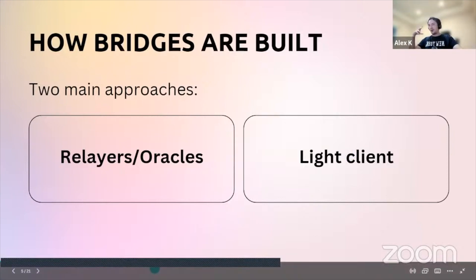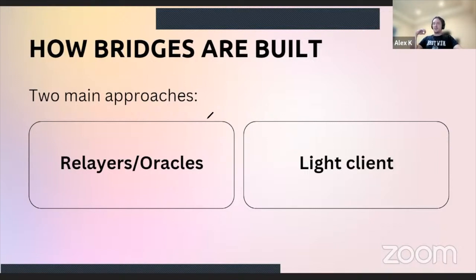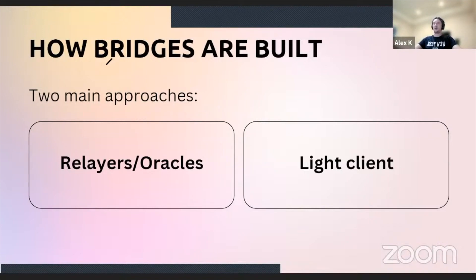Looking at bridges and liquidity and token transfers between chains, there are two main approaches used on the market today. We'll call them the relayers-and-oracles approach and the light client approach. For example, if we talk about relayers and oracles, the most common names that pop up are AnySwap and Multi-chain. For light clients, probably the purest example is the Rainbow Bridge between Near and the Ethereum ecosystem. These two approaches are the two extremes of all the spectrum one can take, and we'll look at how Layer Zero fits in.